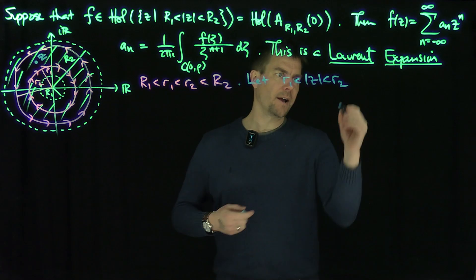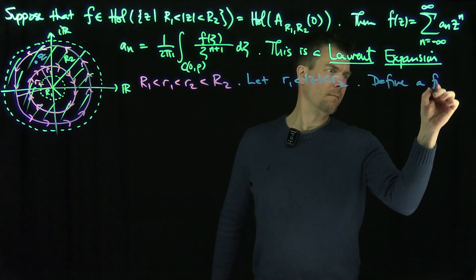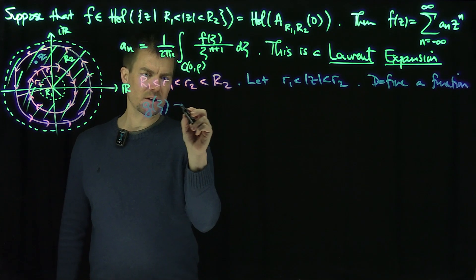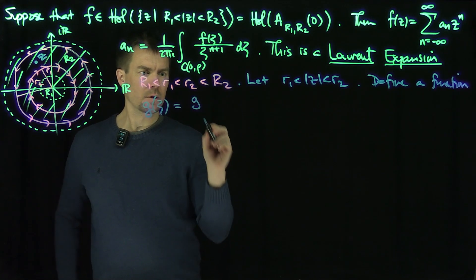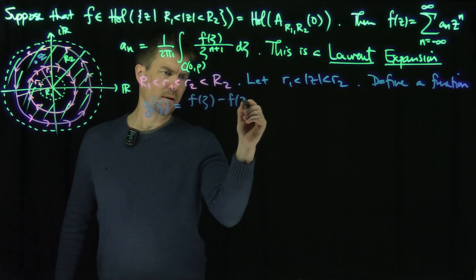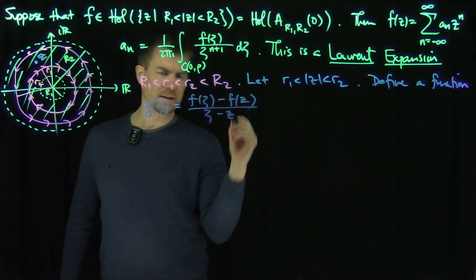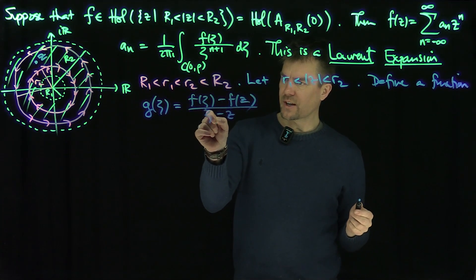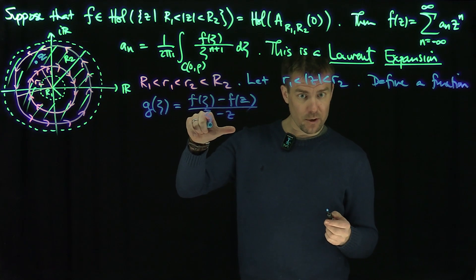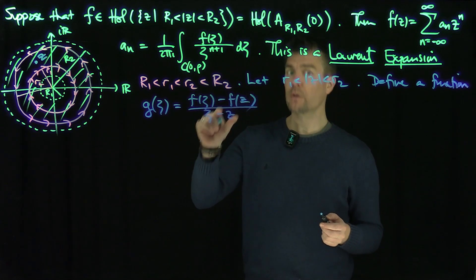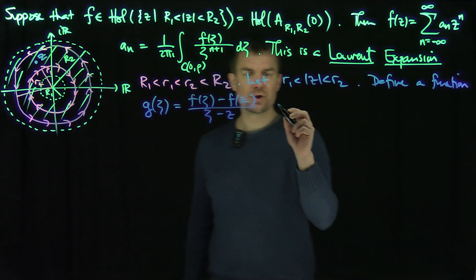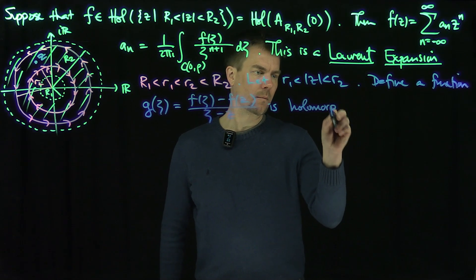Now what we want to do is define the function G of ζ. G(ζ) is going to be F(ζ) minus F(z) over ζ minus z. This function has a removable singularity at ζ = z because F is holomorphic — it's a difference quotient, and as ζ approaches z it converges to F′(z), which exists because F is holomorphic. So this function G is holomorphic on the annulus.